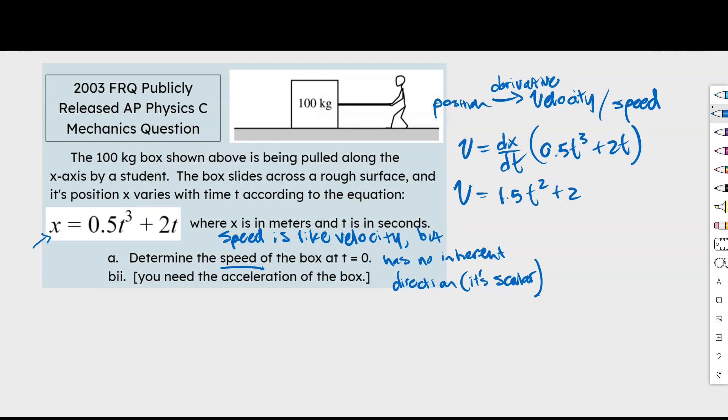Now looking back at the problem here, it says at time equals zero. All right, well, if we plug in zero, v at zero therefore would be 1.5 times zero squared plus two, well, that's just going to be two. And our velocity is going to be in meters per second.